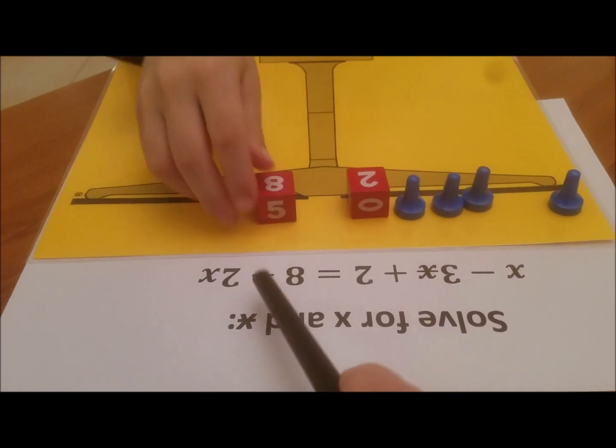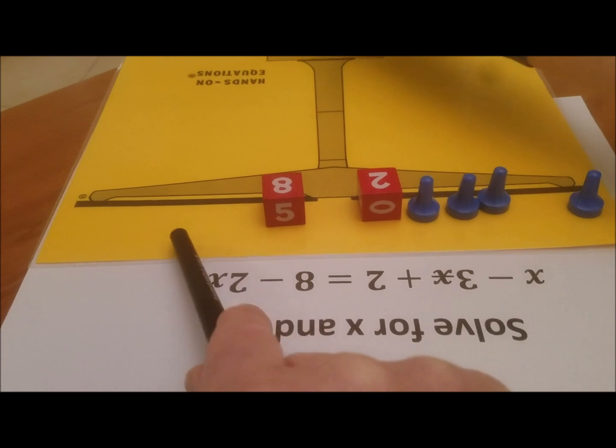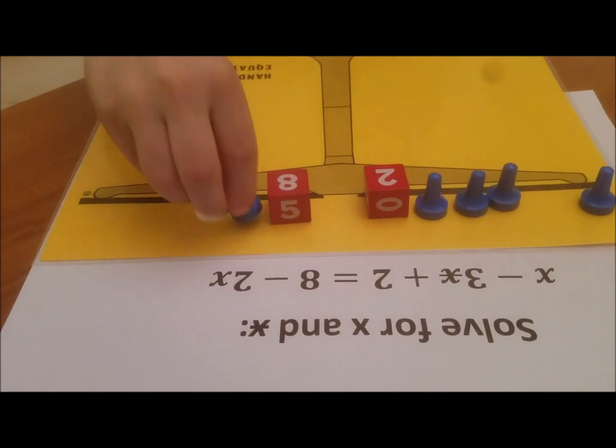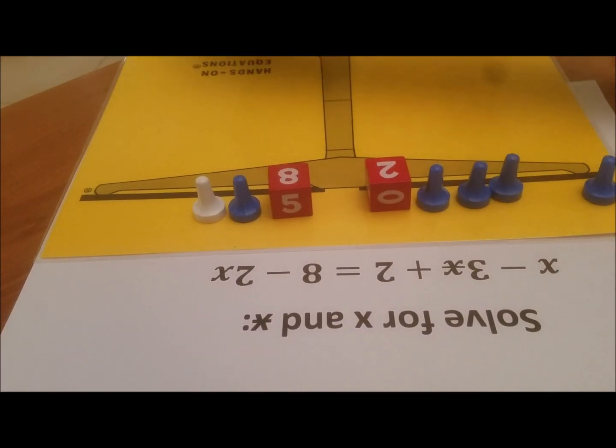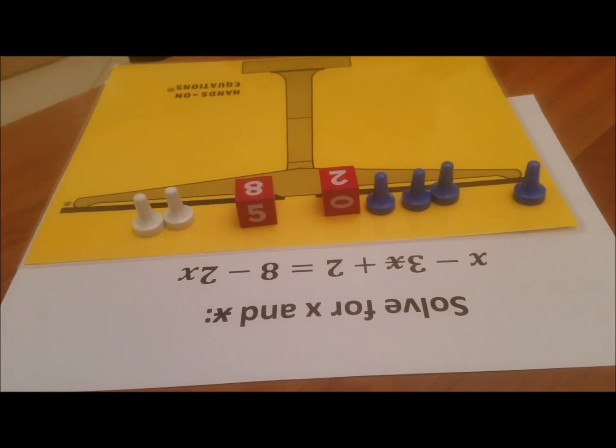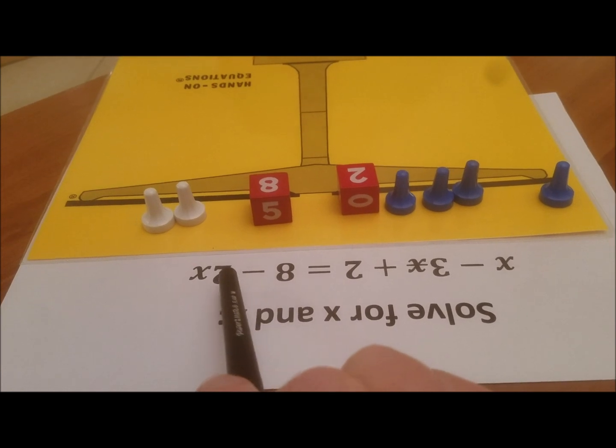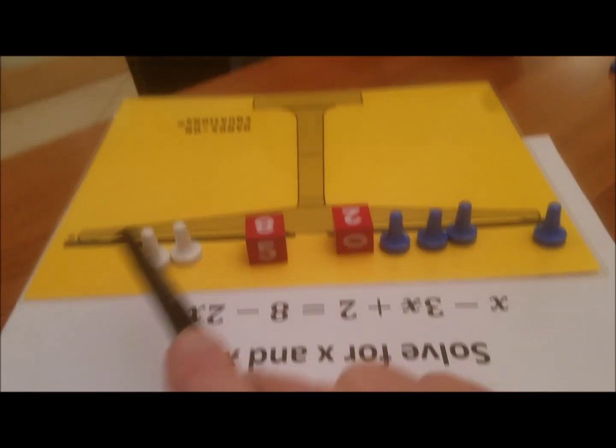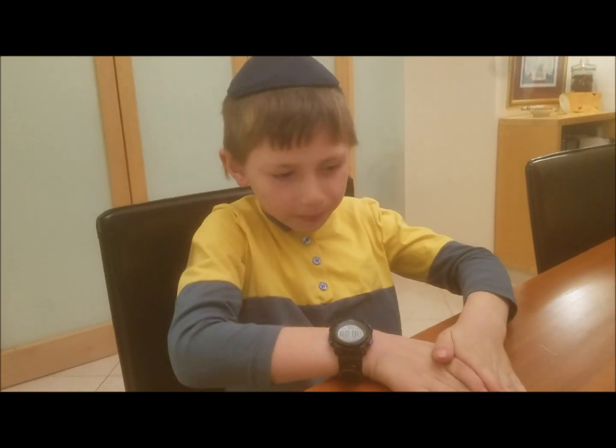Take away two X, but we don't have two blue pawns to take away, so what are you going to do? You're going to add two pairs of opposites, and now you can take away two X. Beautiful. So the end result of taking away two X's is to add two stars.